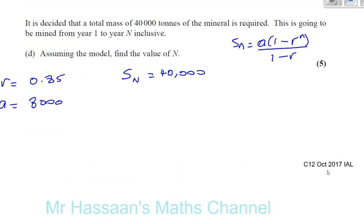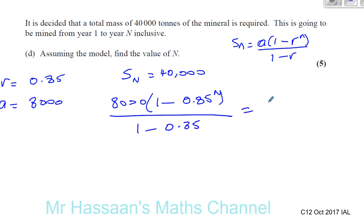Now what we have is A, which is 8,000, times (1 minus R, which is 0.85, to the power of N) over (1 minus 0.85), and that equals 40,000.